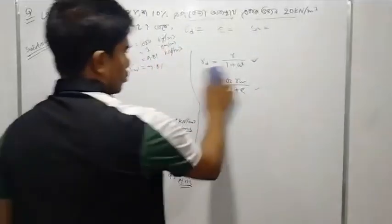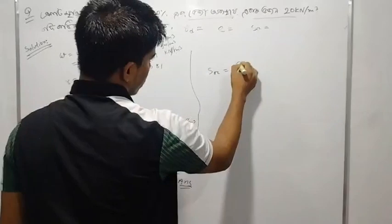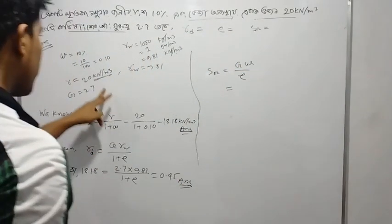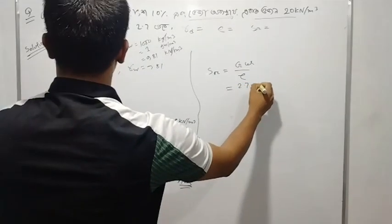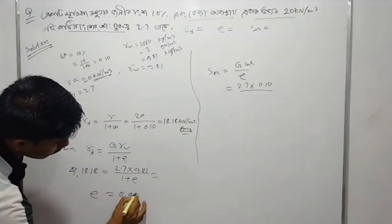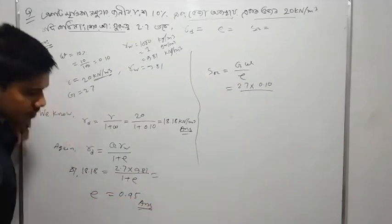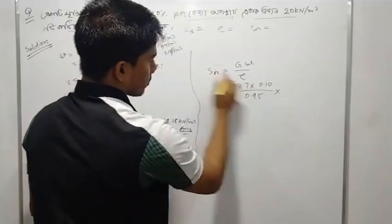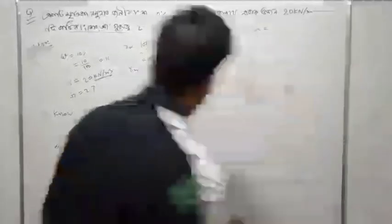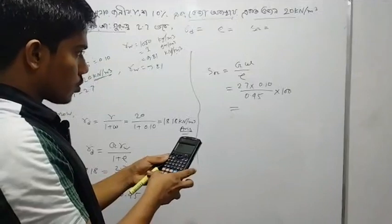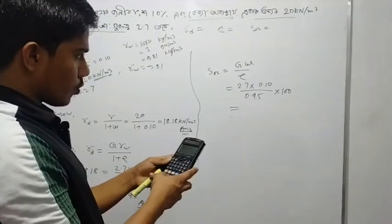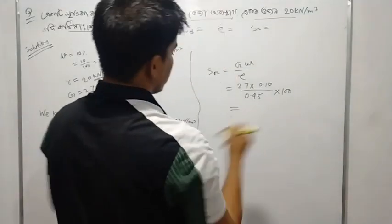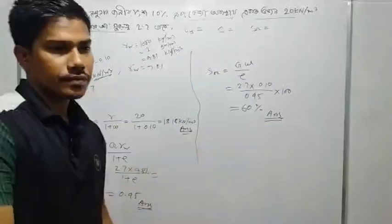This is the exact same approach, so no matter how many steps are involved, Sr (degree of saturation) is equal to G times omega divided by e. So: 2.7 times omega equals 1.518, divided by e — giving 0.45. The degree of saturation answer is 0.45, which corresponds to 45 percent. That's the answer.